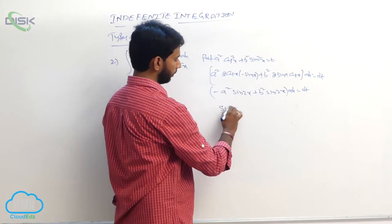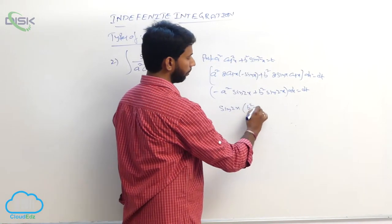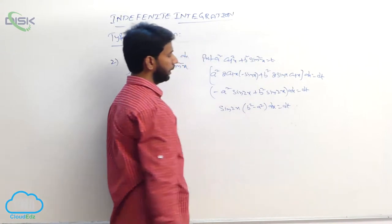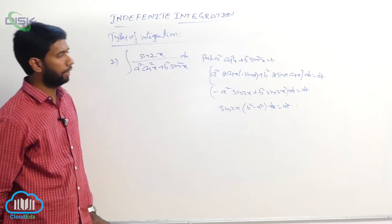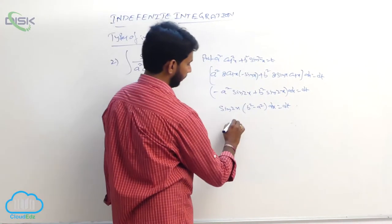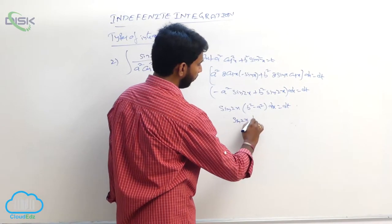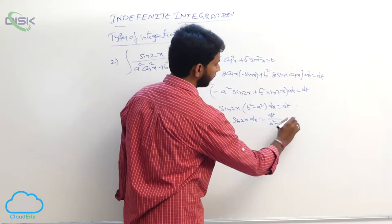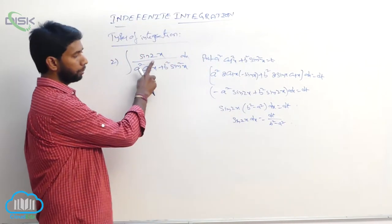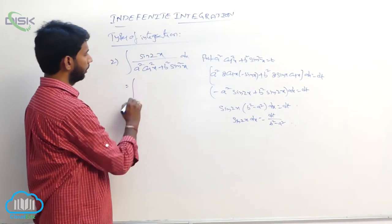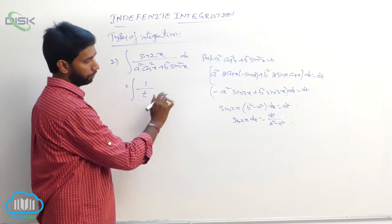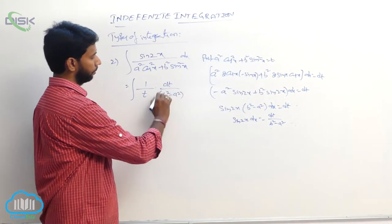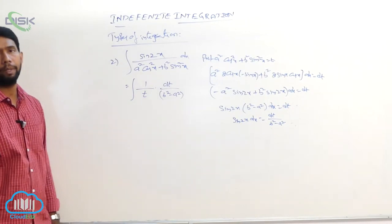Taking sin2x as common: sin2x times (b² - a²) dx equals dt. Therefore, sin2x dx equals dt/(b² - a²). Substituting into the integral: integral of (1/t) times dt/(b² - a²).